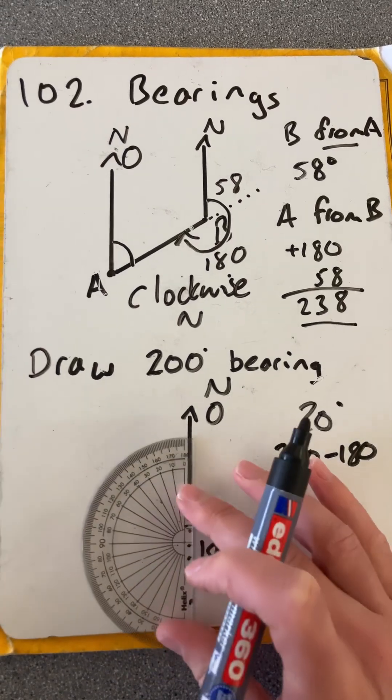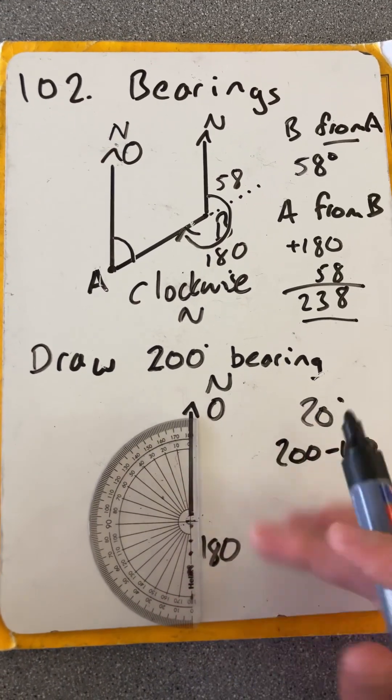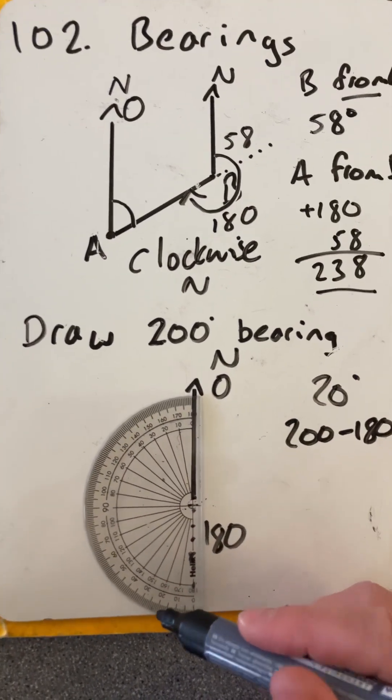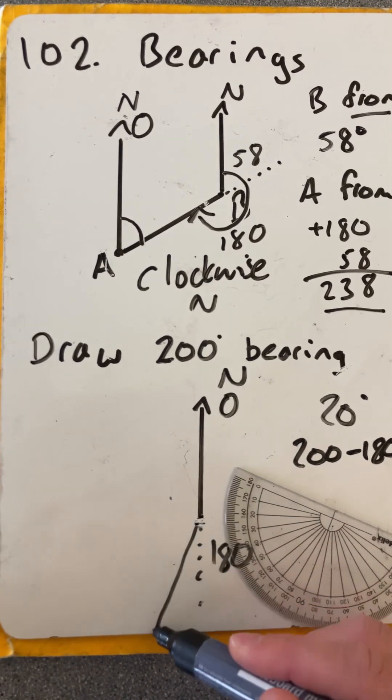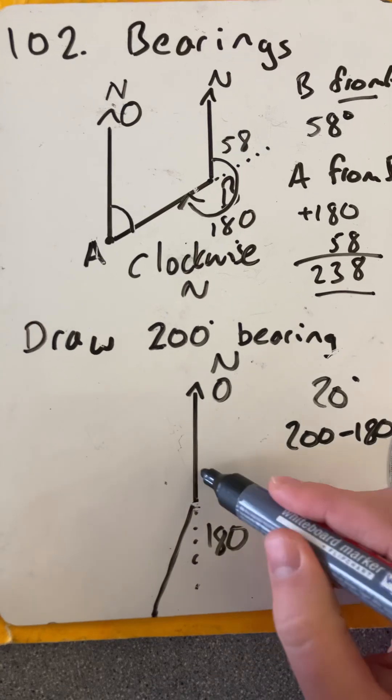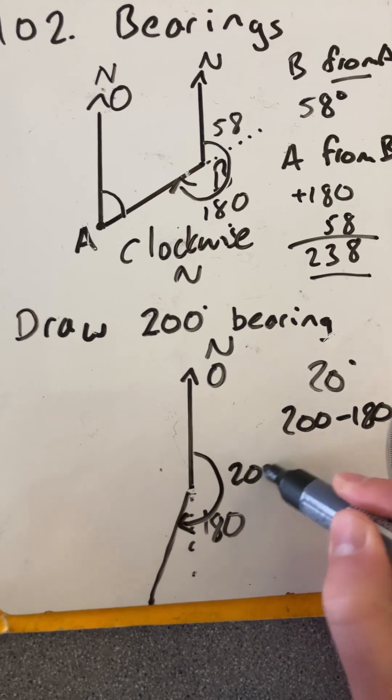So we take our protractor, put the cross where that dot was, and read up to 20, which is about there. And then draw a line there. And then that bearing there is 200 degrees.